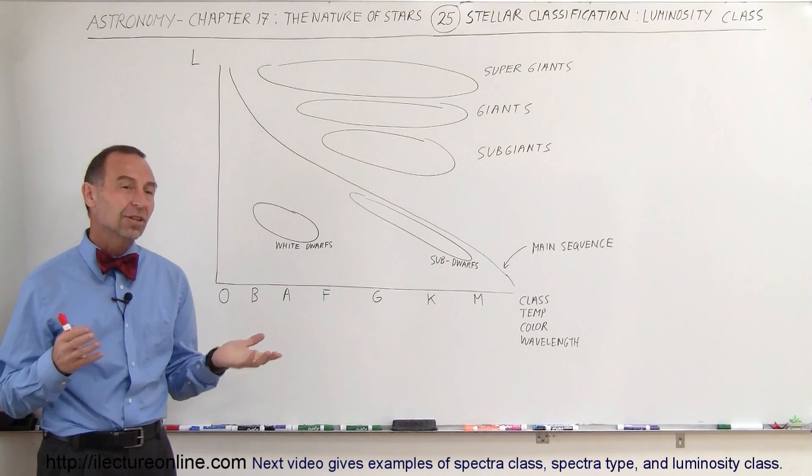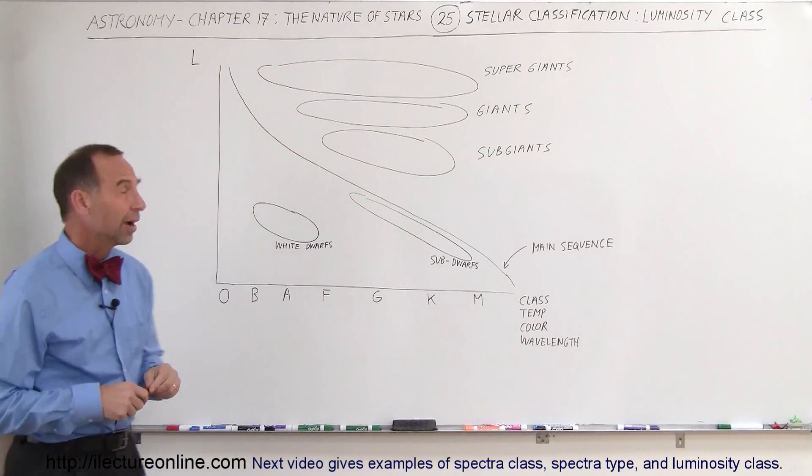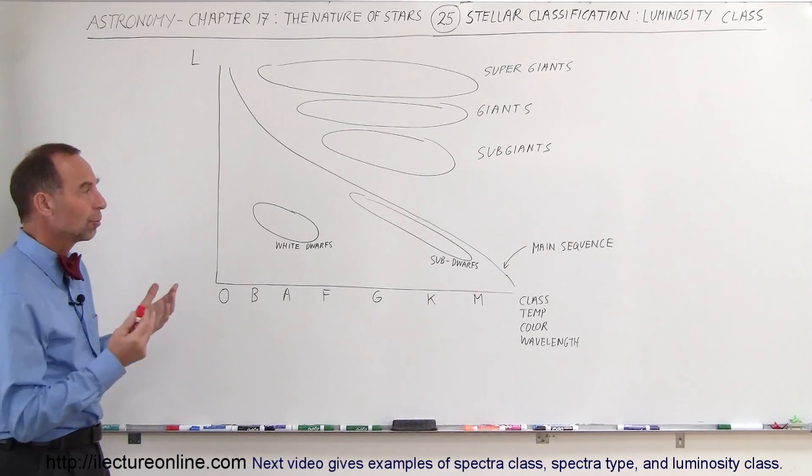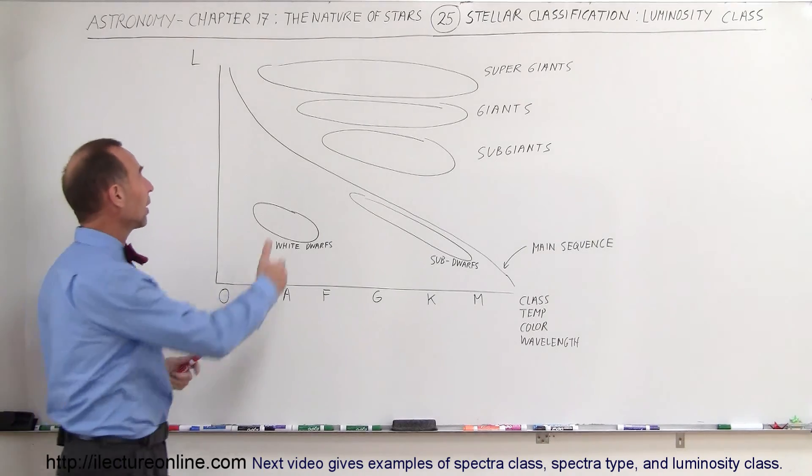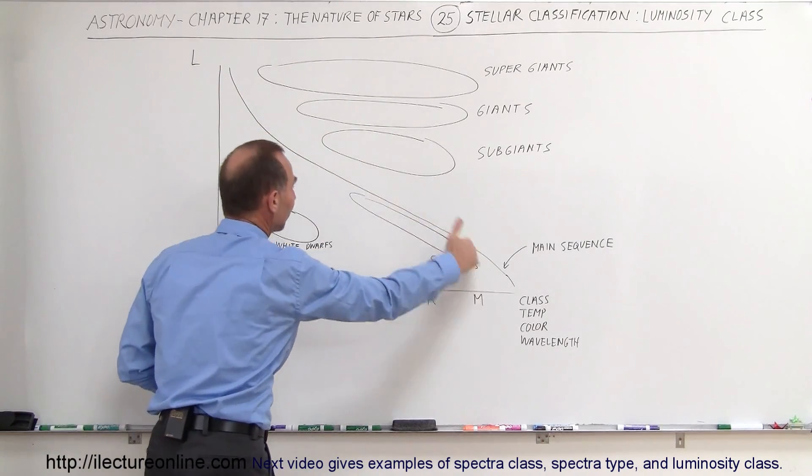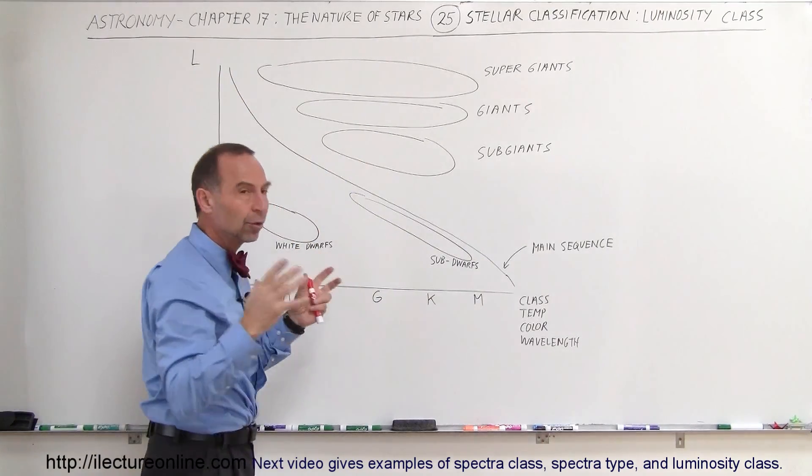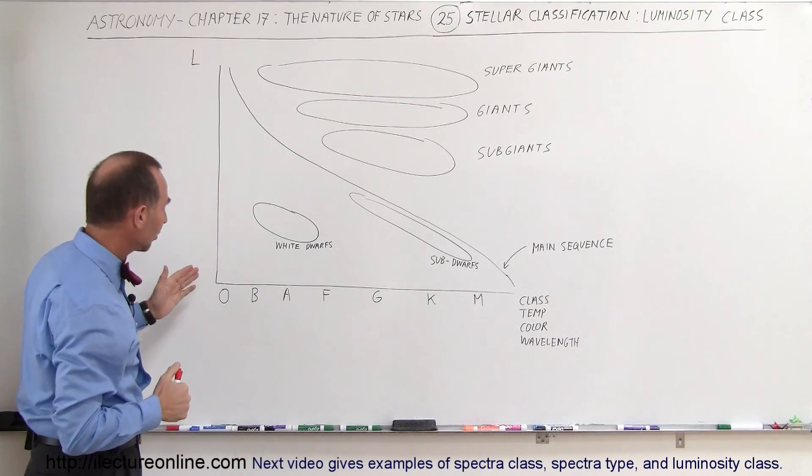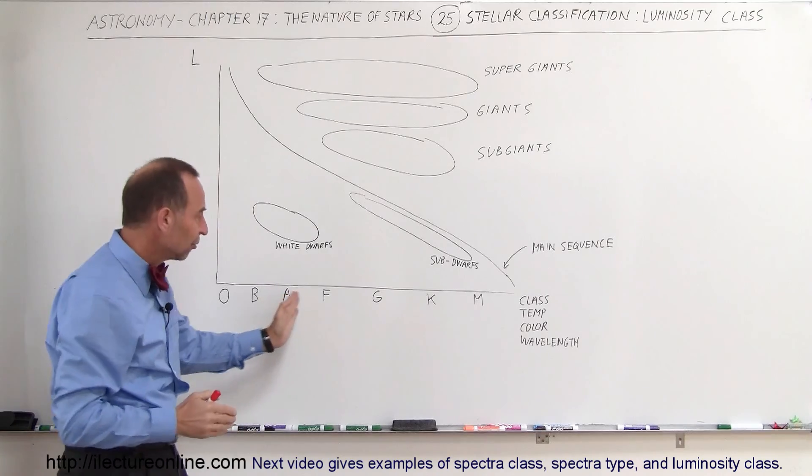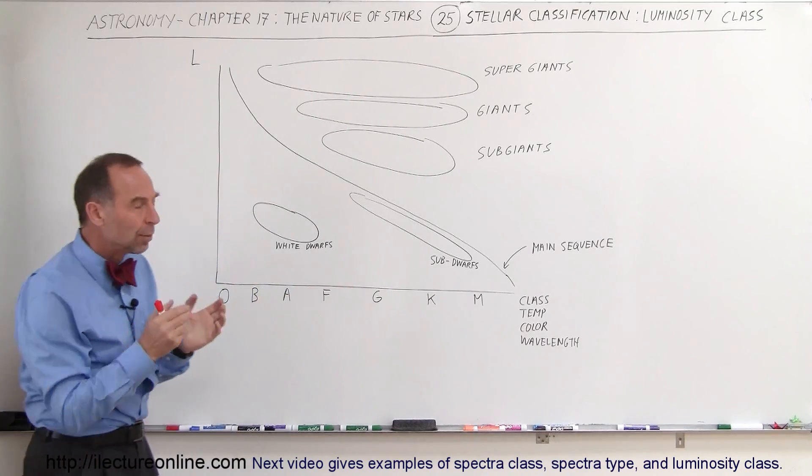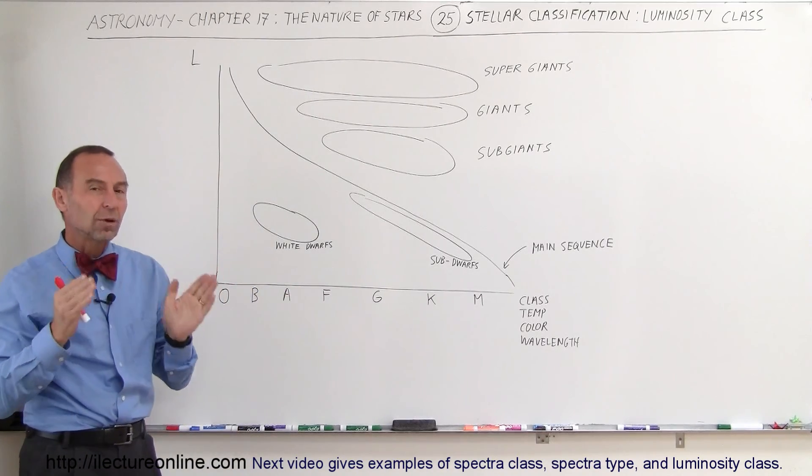It was recognized initially when the HR diagram was devised how useful it was in determining the type of star we were looking at, because the vast majority of stars were on the main sequence. They fell into a very nice categorization where we have the spectral class OBAFGKM and the spectral type, the subdivisions of these classes, and then we were able to find out exactly what star we were looking at.